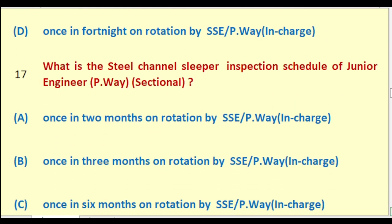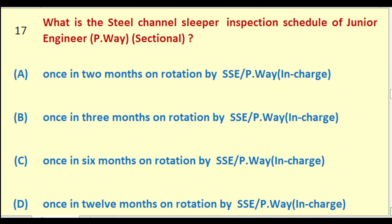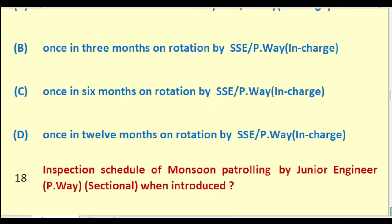What is the steel channel sleeper inspection schedule of Junior Engineer Permanent Way Sectional? Options: once in two months on rotation by SSE PW in charge; once in three months on rotation by SSE PW in charge; once in six months on rotation by SSE PW in charge; once in twelve months on rotation by SSE PW in charge. The right answer is: once in six months on rotation by SSE Permanent Way in charge.